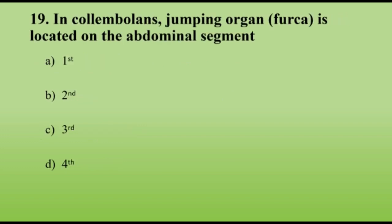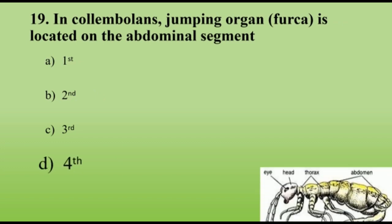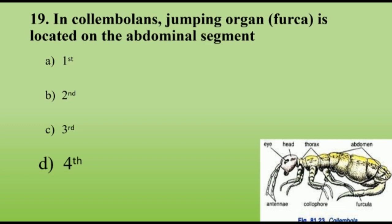In Collembolans, the jumping organ furcula is located on which abdominal segment? Fourth. In Collembolans there exist three pregenital abdominal appendages: on the first abdominal segment they have an organ called the collophore, which is an adhesive organ; on the third they have the tenaculum or catch that holds the furcula; and on the fourth abdominal segment they have the furcula, which is the jumping organ.